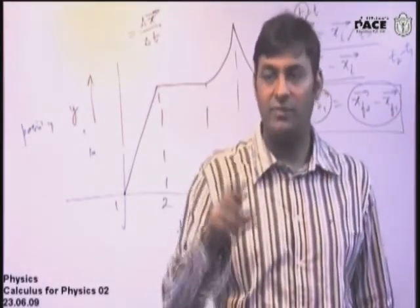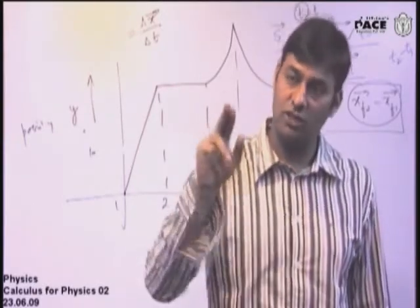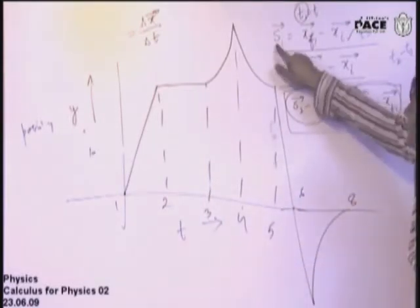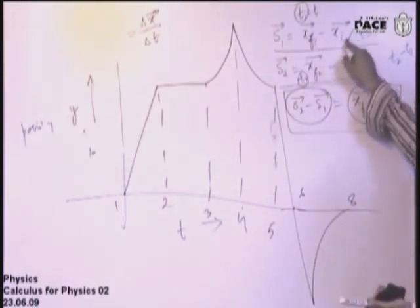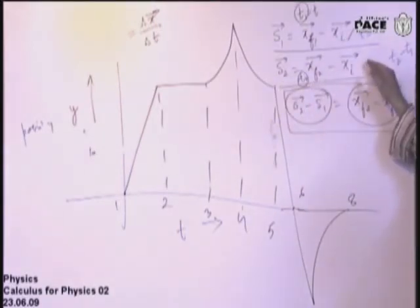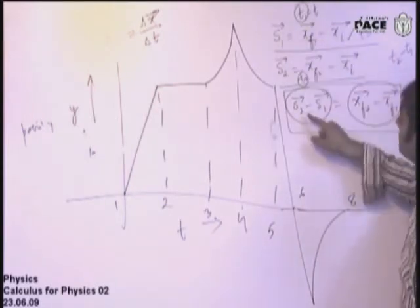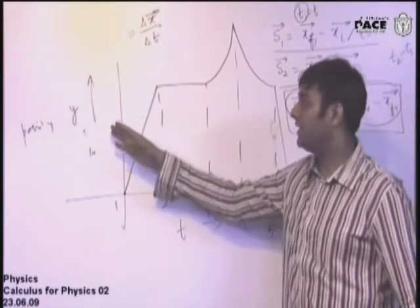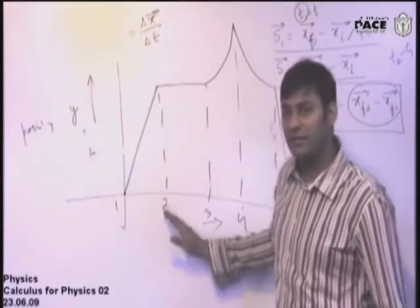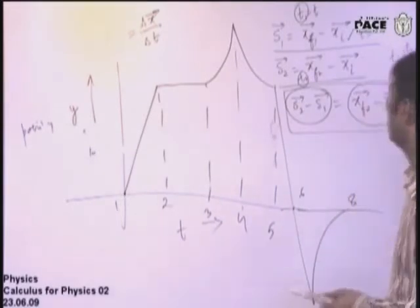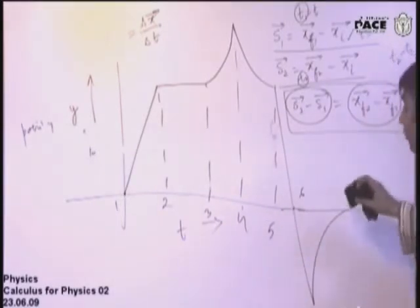So change in displacement is also the displacement of the body. Because change in displacement — what is displacement? Final position with reference to some initial position. So change in displacement comes out to be the same as displacement of the body for any time interval. Therefore, whether it is position versus time or displacement versus time, the slope will always represent velocity.